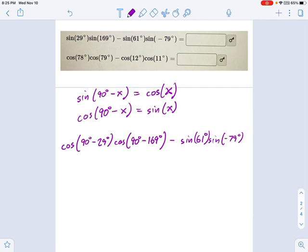I take back everything bad I said about them. They turned out to be useful this time. Now, what's 90 minus 29? Oh, look at that. Not coincidentally, it is 61 degrees. And what is this other thing over here? 90 minus 169. That is negative 79 degrees.